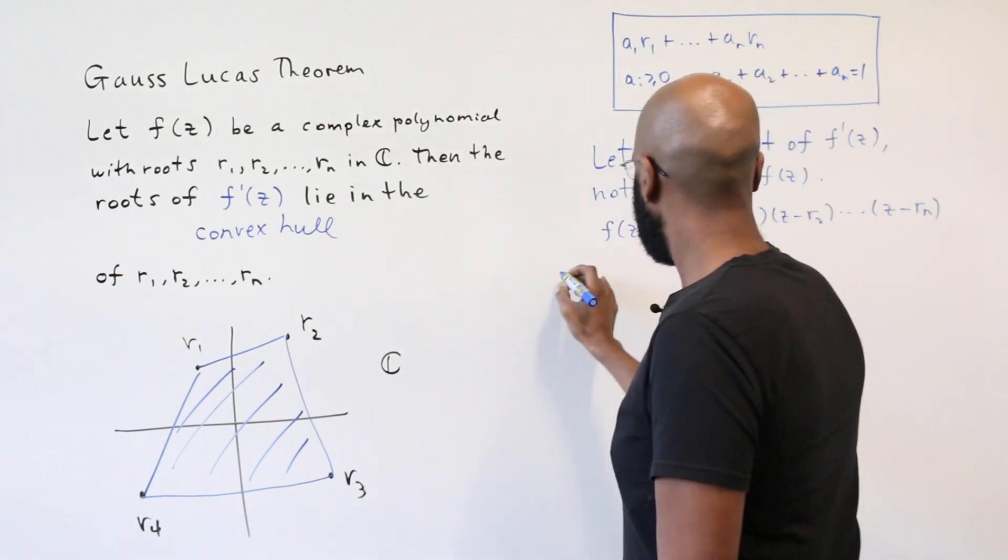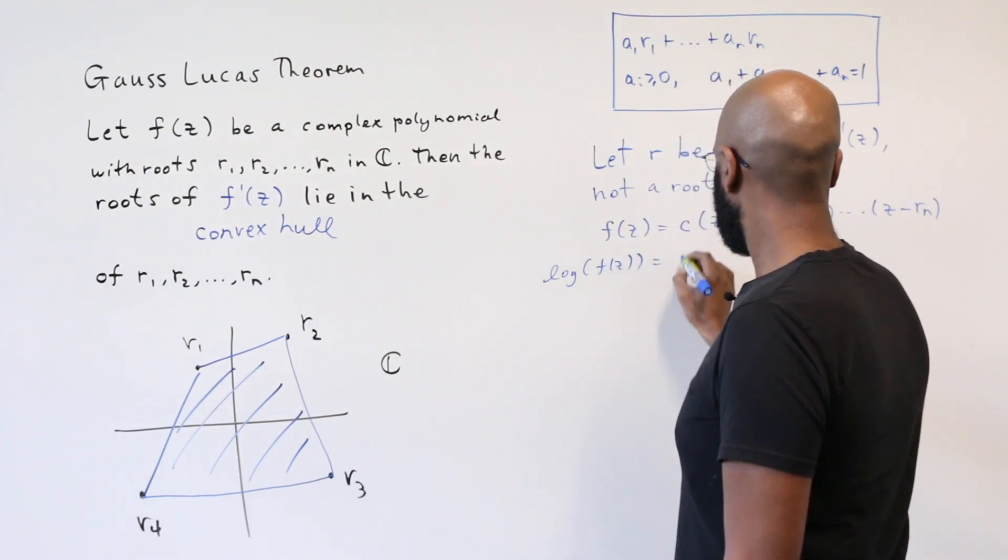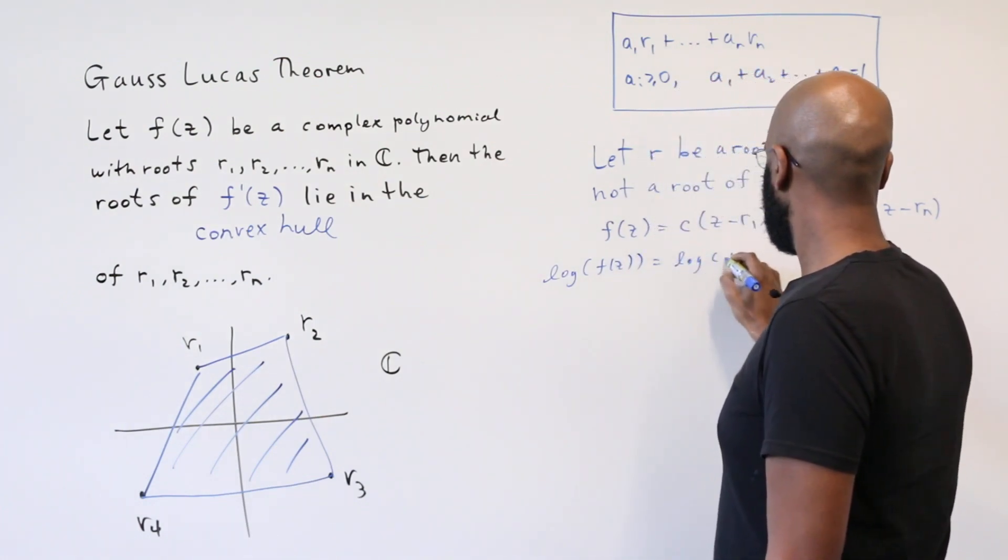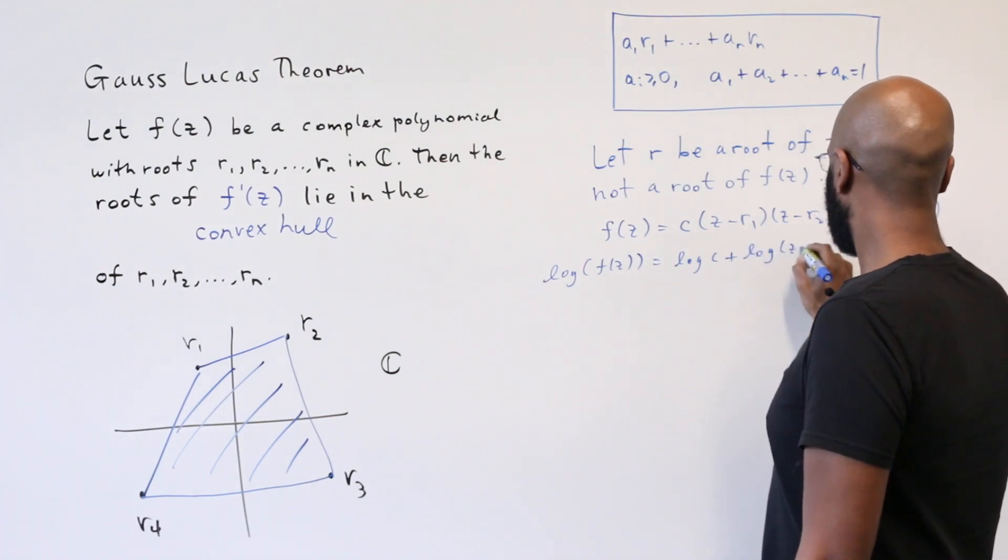If we take the logarithm of both sides here, we'll get the logarithm of c plus the sum of the logarithms of all of these factors.